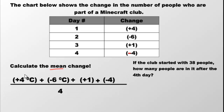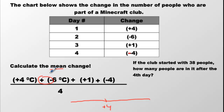Once you get good at this, you'll just do it in your head. We start at positive four. Looking at the next two symbols — different — means go to the left six spots. We end up at negative two. That's six numbers to the left. But then we have to go to the right one spot, so we end up at negative one.